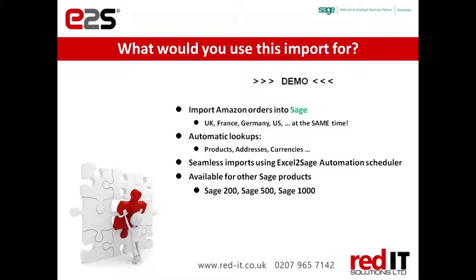The automation module has a scheduler, so I could put this on a schedule to import it every hour, every 10 minutes, every two hours or whatever. And it's available for all versions of Sage, including 50, 200, 500, 1000 and so on.